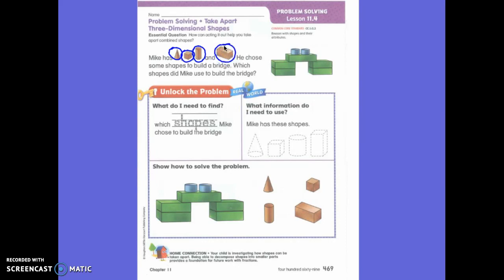He chose some shapes to build a bridge. Which shapes did Mike use to build the bridge?